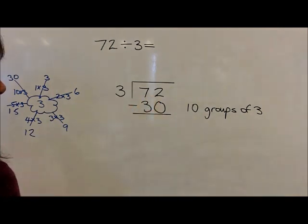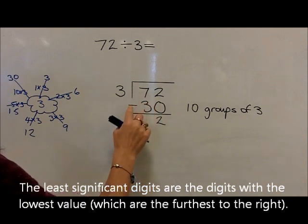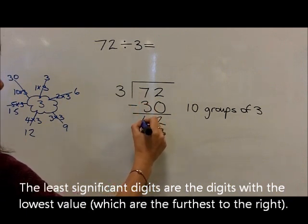Starting with the least significant digit, 2 take away 0 is 2, and 70 take away 30 is 40.